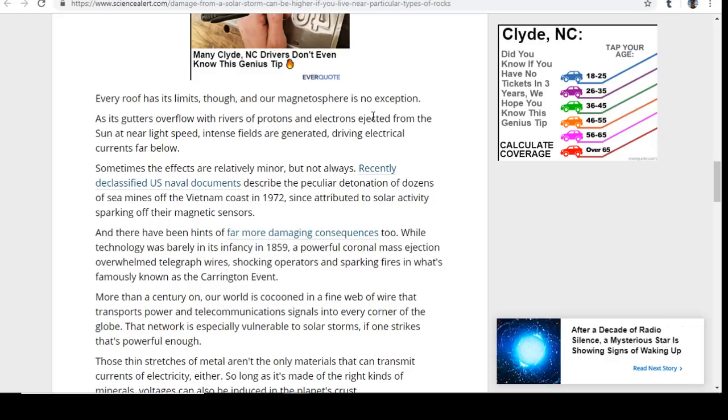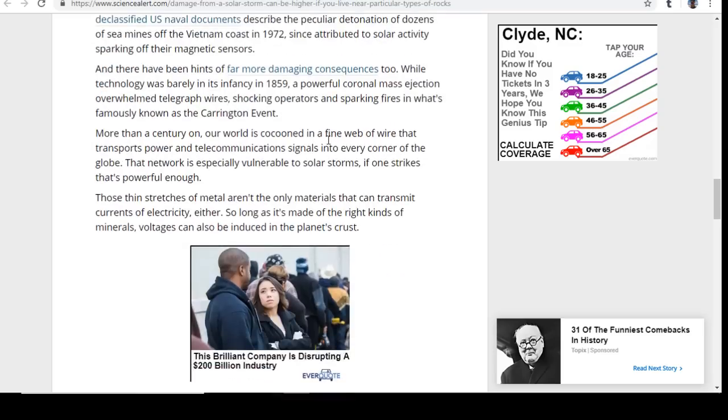There have been hints of far more damaging consequences. While technology was barely in its infancy in 1859, a powerful coronal mass ejection overwhelmed telegraph wires, shocking operators and sparking fires in what's famously known as the Carrington Event. More than a century on, our world is cocooned in a fine web of wire that transports power and telecommunication signals into every corner of the globe. That network is especially vulnerable to solar storms. Those thin stretches of metal aren't the only materials that can transmit currents of electricity either.